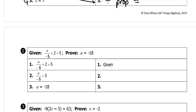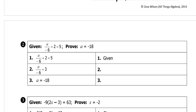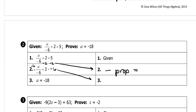On this one, what did we do on each step to solve it? First we subtracted 2 on both sides, which means it's the subtraction property of equality. Then on the next one, we would multiply both sides times negative 6, so that is the multiplication property of equality.